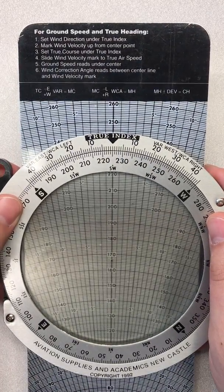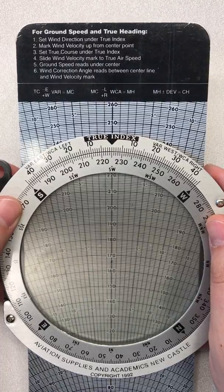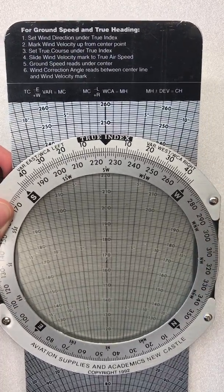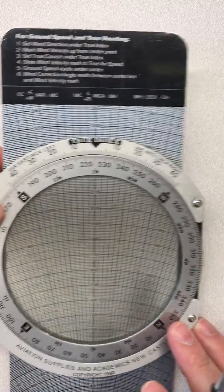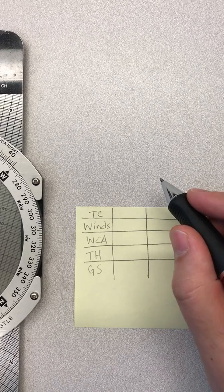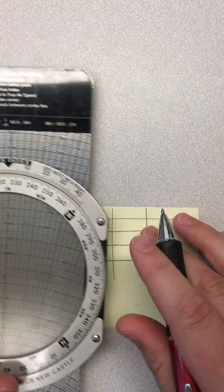We're going to do all that stuff in order to determine a wind correction angle left or right based on the winds aloft, and we're also going to eventually find a ground speed as well. So provided that we know certain data, we can actually yield some other data.